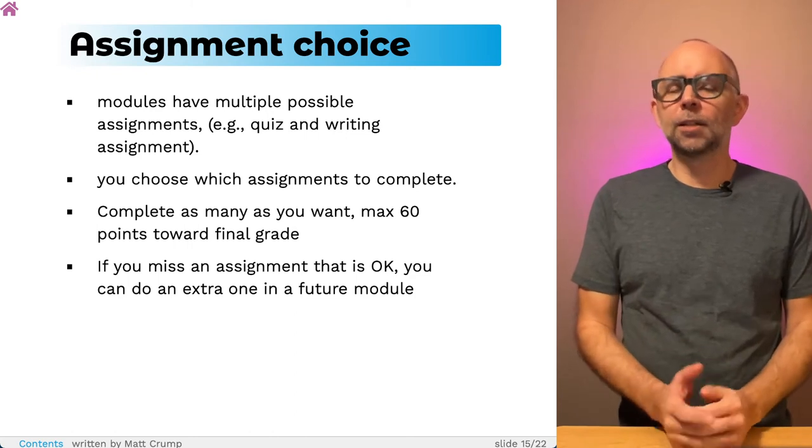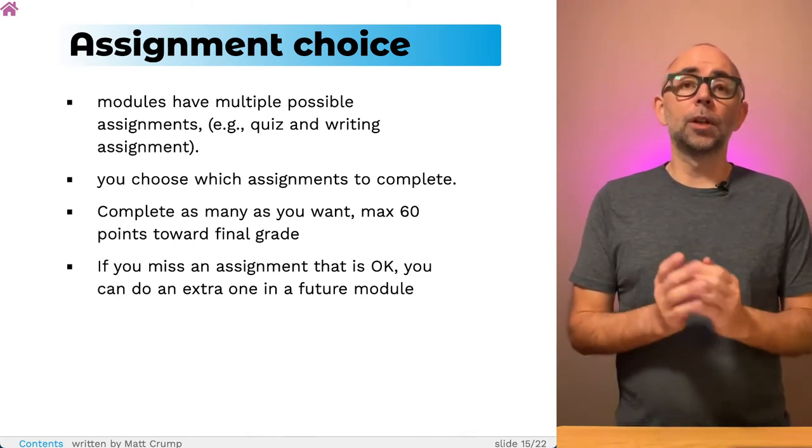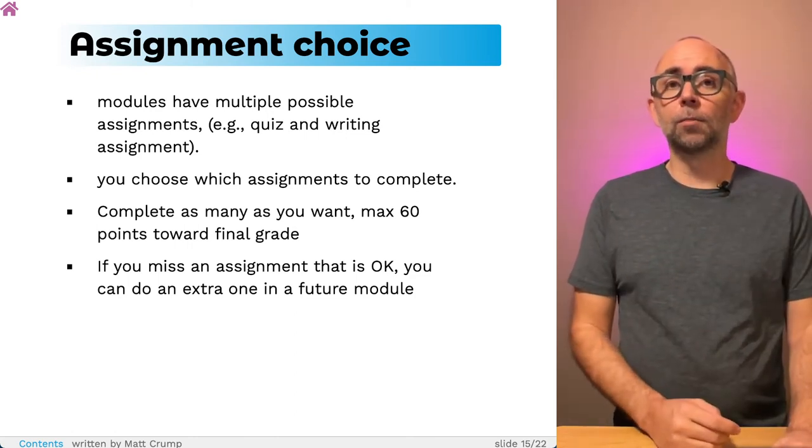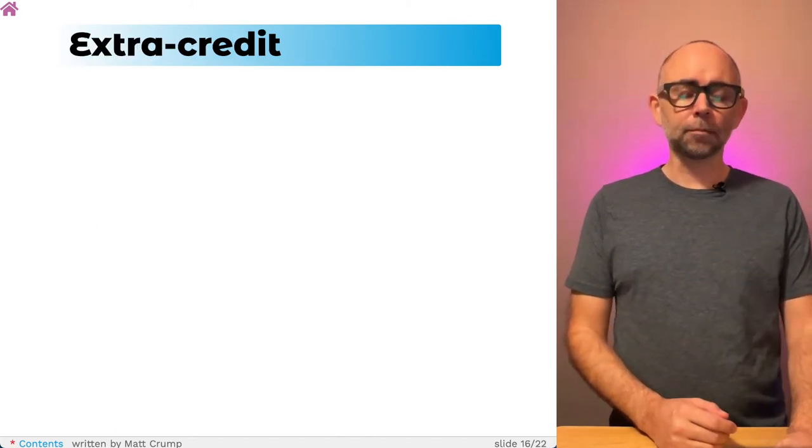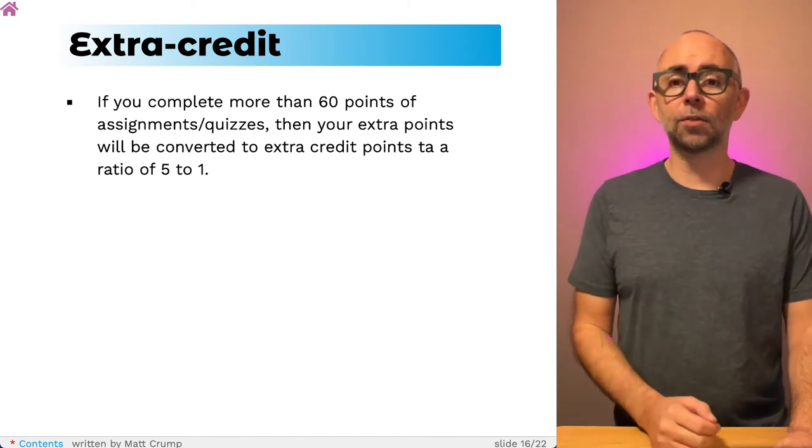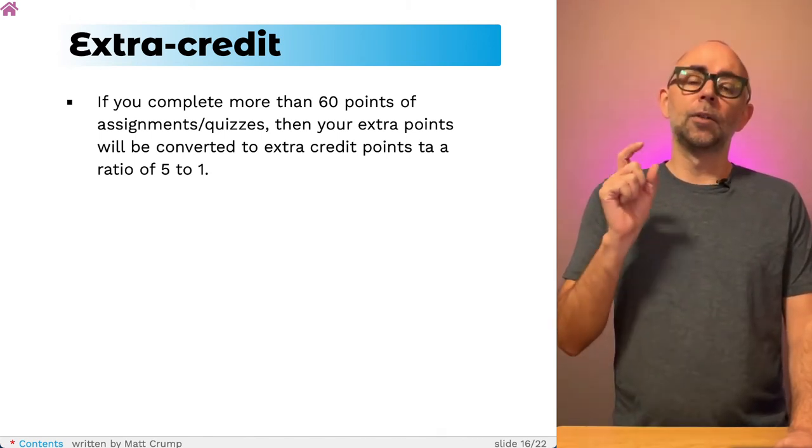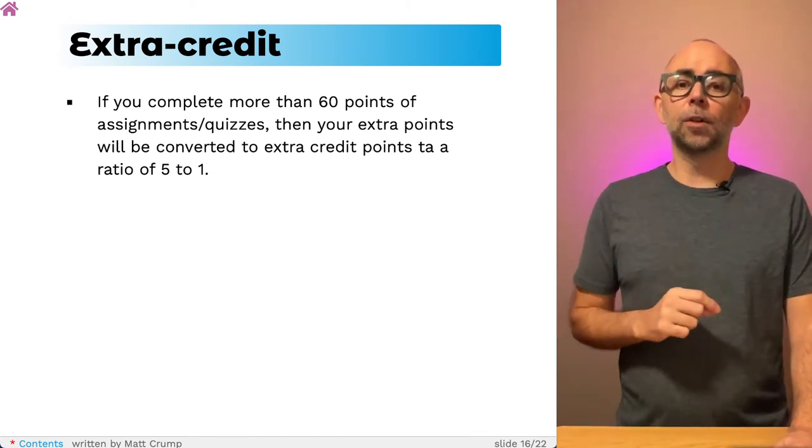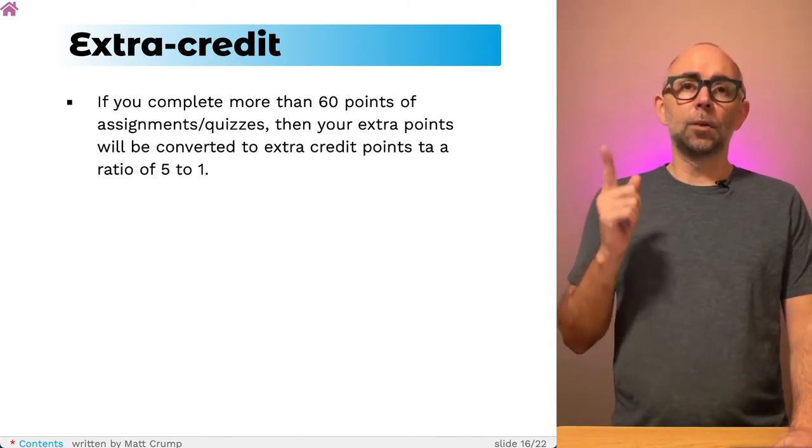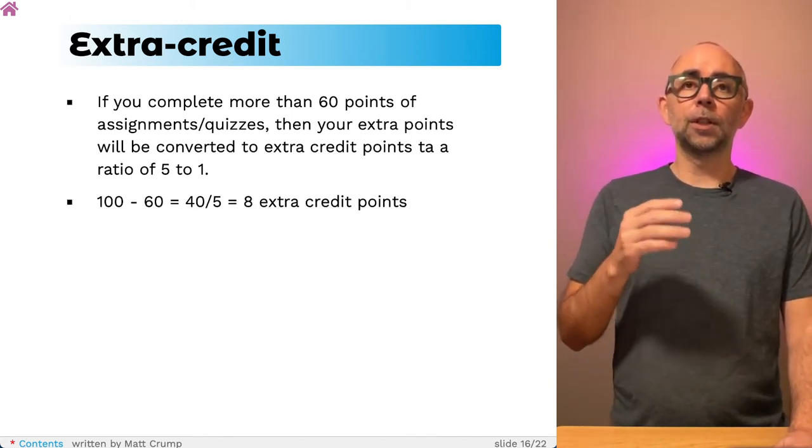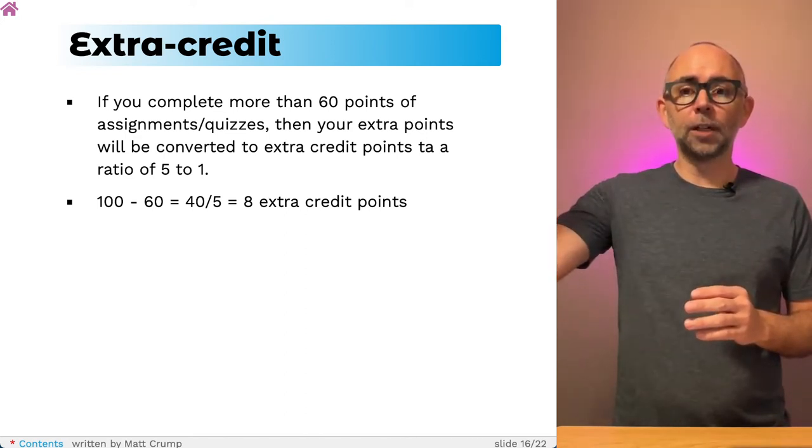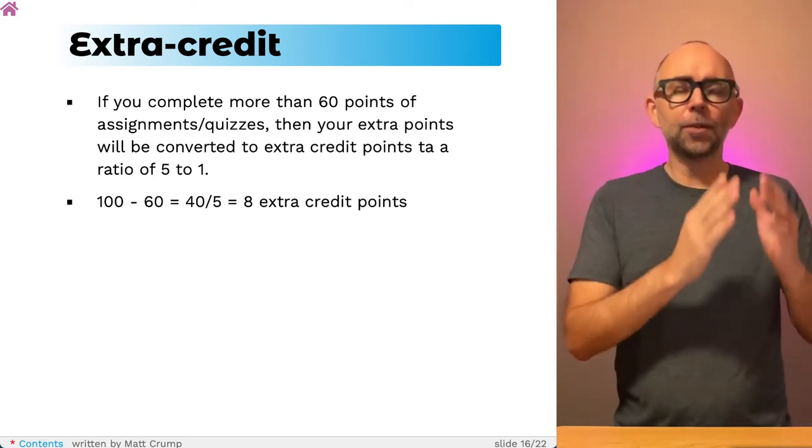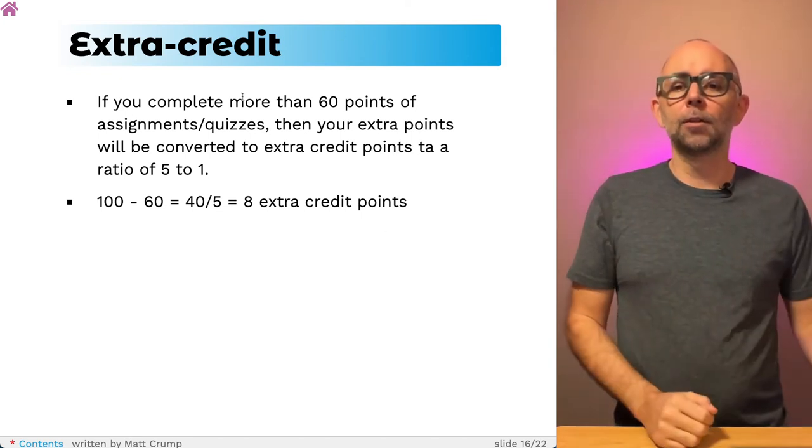You max out at 60 points towards your final grade, but you can complete more than that. This means if you miss an assignment, it's not that big of a deal. You can do an extra one later on in a future module, to make up for any of those points that you missed. Anything you do over 60 points is worth extra credit. And those extra points will be converted following a ratio of five to one. So if you did a hundred total points, you'd only get 60 towards your final grade. That extra 40, you divide that by five. So for example, that would give you eight extra credit points.